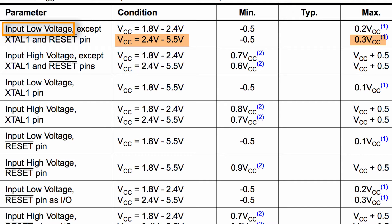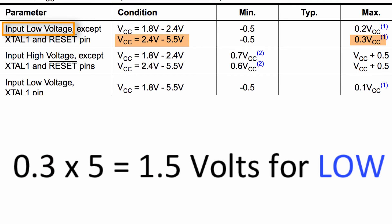Well what is 0.3 VCC then? What that is saying is we take 0.3 times our VCC, and that is going to give us the maximum voltage that we would read as a low. So what is that? 0.3 times 5 equals 1.5.